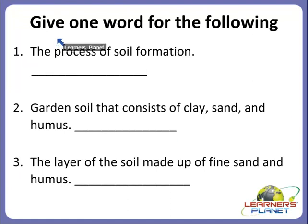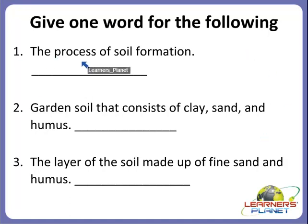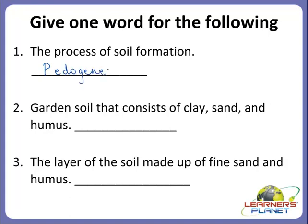I hope you are clear with that activity. Now we will move on to the next activity: give one word for the following. I will read the sentence and you have to guess the correct answer in just one word. The first question: the process of soil formation. It starts with the letter P. Yes — it is called pedogenesis. P-E-D-O-G-E-N-E-S-I-S. Always remember that the process of soil formation is called pedogenesis.